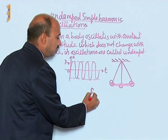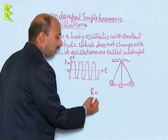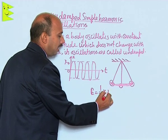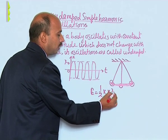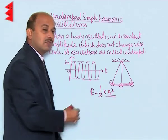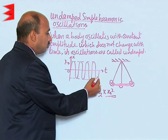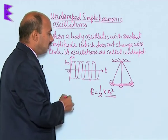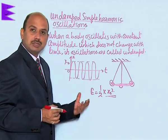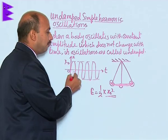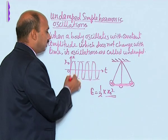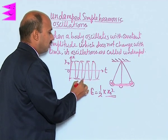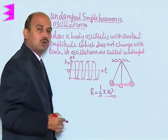In that case, the energy of the pendulum remains constant with time. The total energy equals half k x-naught squared, where x-naught is the amplitude. The graph shows that the amplitude x-naught does not change with time — the amplitude of oscillation remains constant.